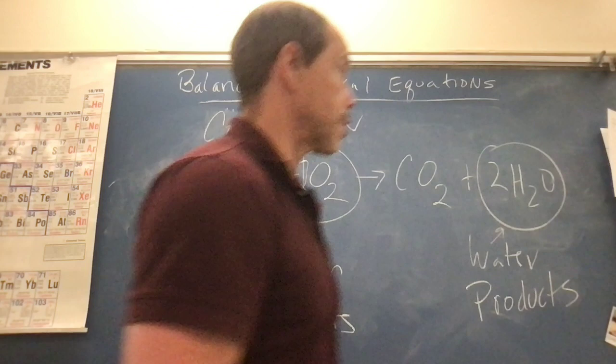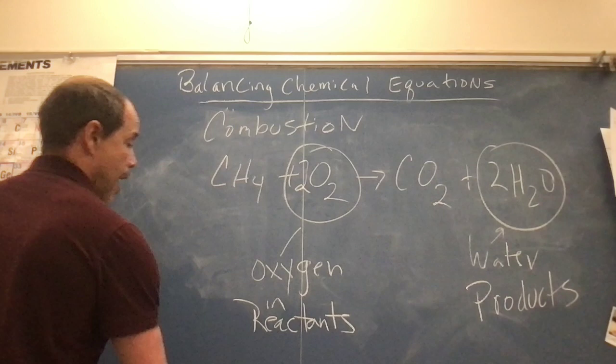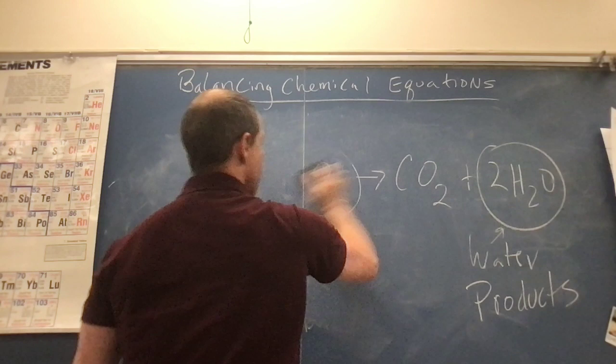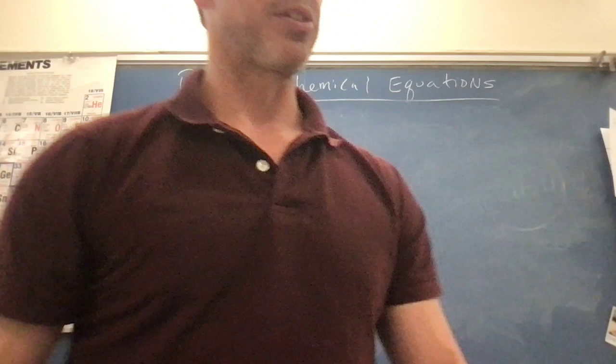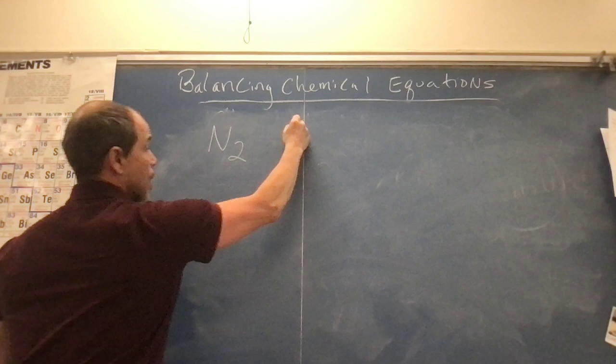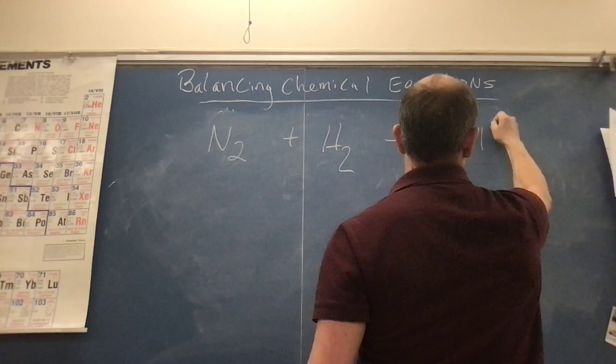Now we're going to learn how to balance chemical reactions. Your worksheet says 'please balance the following reactions, be sure to show your work.' Some students pick this up right away, others struggle — either way we'll work through it. The first one is nitrogen plus hydrogen yields ammonia, which you might remember as nitrogen trihydride.